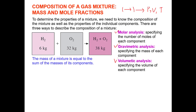For example, if we have two non-reacting gases — hydrogen with a mass of 6 kg and oxygen with a mass of 32 kg — mixed together, the mass of the gas mixture equals the sum of the masses of the two components: 32 plus 6 equals 38 kg. So the mass of the mixture equals the sum of the masses of its components. This is based on gravimetric analysis.